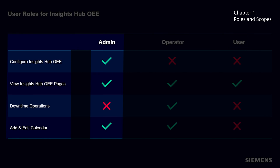With the admin role, the user is entitled to configure all there is to configure in the application, as well as view the different pages in OEE and add and edit calendars. The admin role does not automatically entitle the user to perform operations on downtimes, like overwriting downtime reasons, adding measures, or comments.